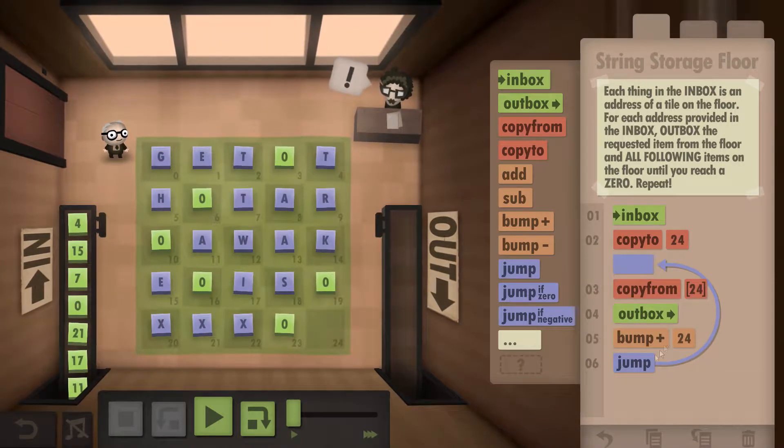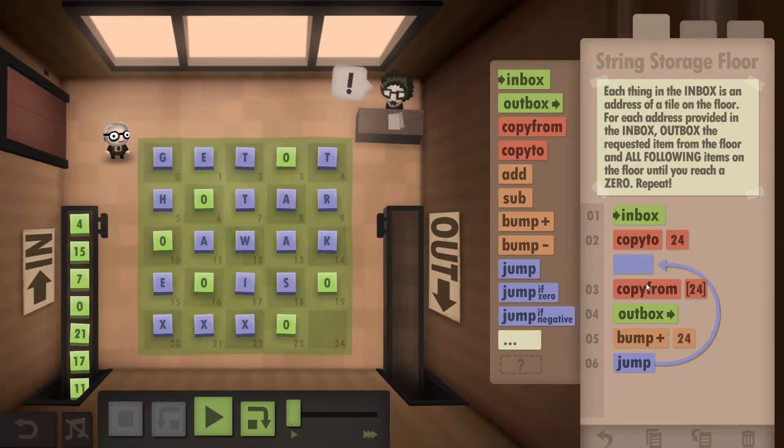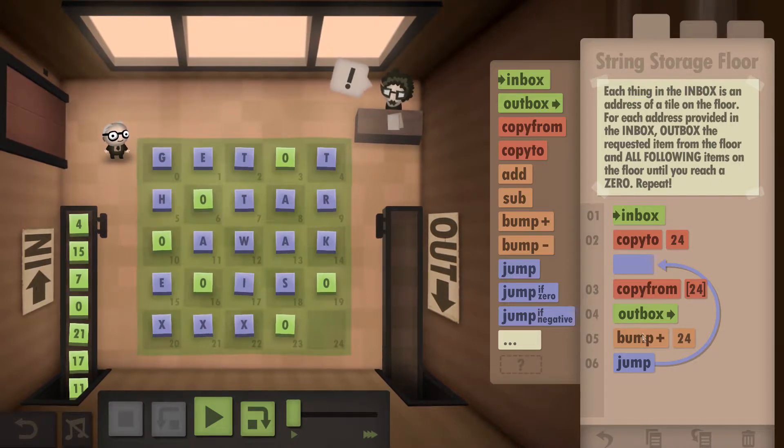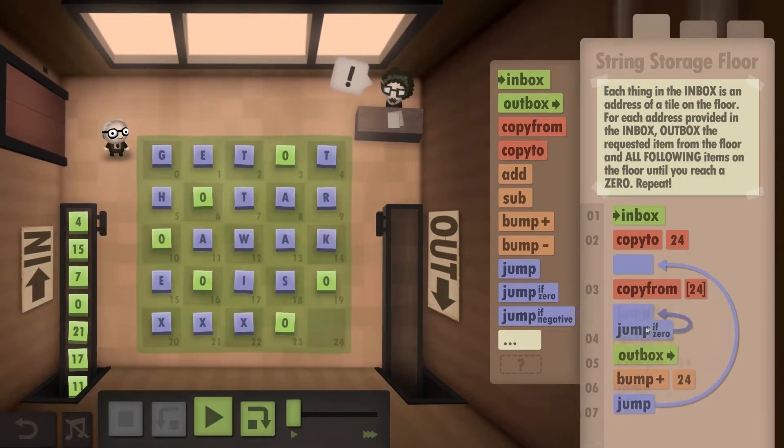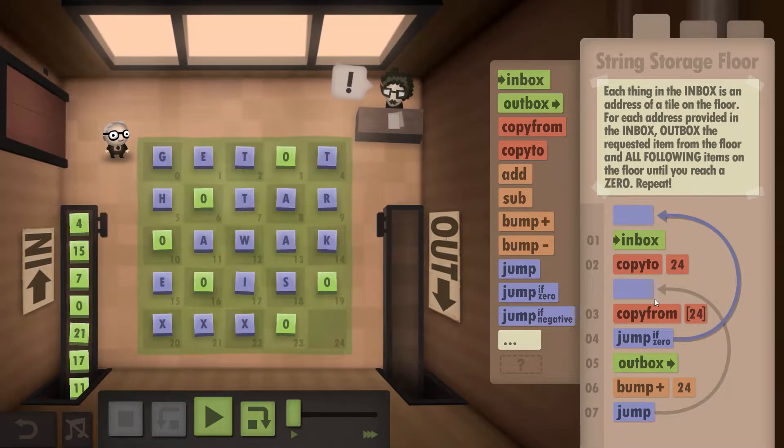So jump up to here. So that would tell it to grab the T, output it, grab the H, output it and then it's going to grab an O. We don't want an O. So if we grab an O, we need to start the whole process again.